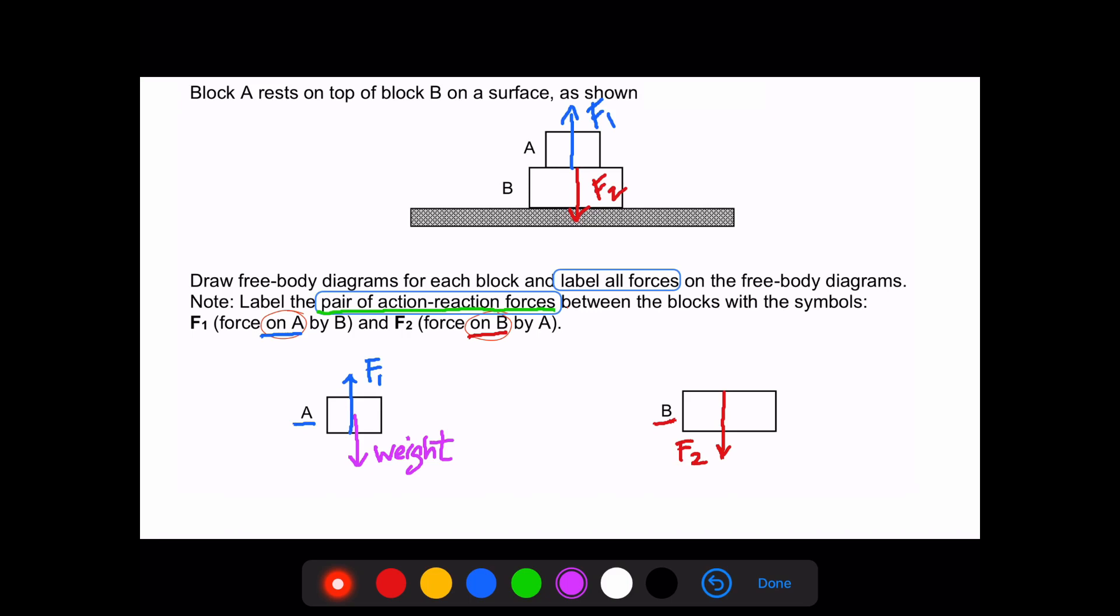Now for B, if we look at the diagram, B is also in contact with the surface, so we expect additional forces from the surface. The surface will be exerting an upward force like this - it's a normal contact force. And of course, B will have its own weight as well.